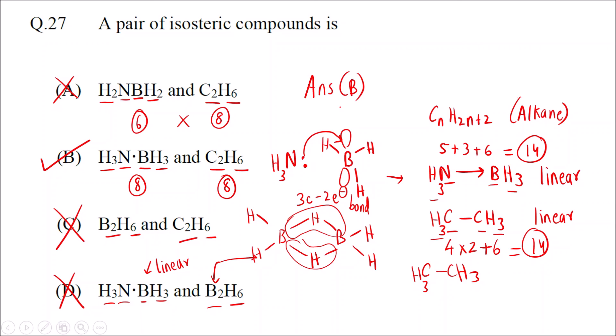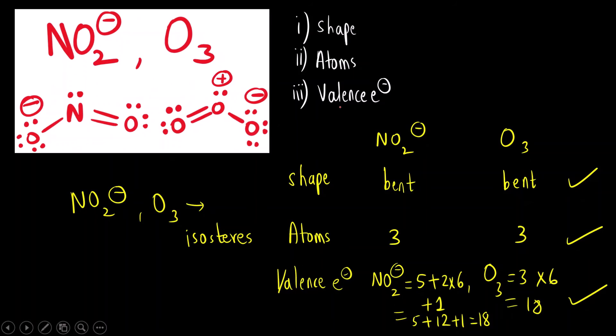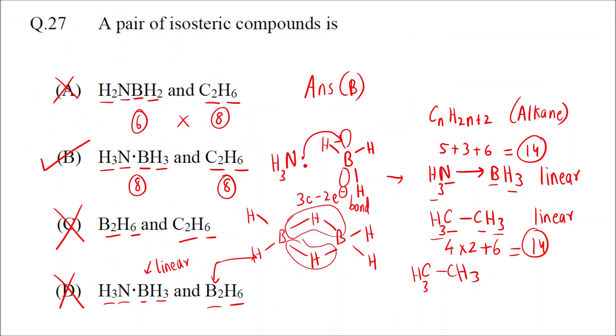I hope you have understood the concept of what an isoster is — molecules having the same shape, same total number of atoms, and the same valence electrons. I hope you have understood this solution. Thank you.